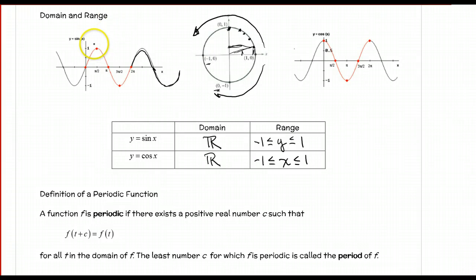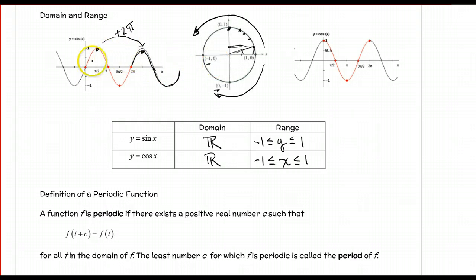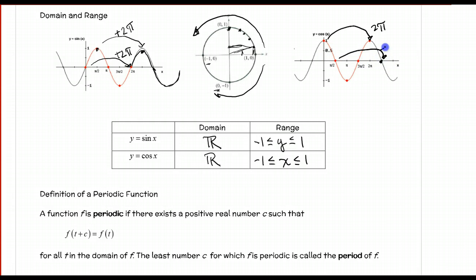Looking at these graphs, I have a point here, and if I move over by 2 pi, I get to that same spot — positive 1 — just on a different portion of the graph. The distance between corresponding points on each period is 2 pi. From this point to this point — 2 pi. From this point to this point — 2 pi. So for these curves, our period, that value of c that gives us back the same value, is 2 pi.